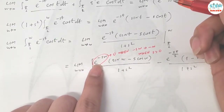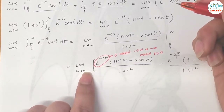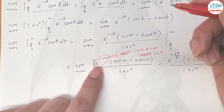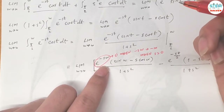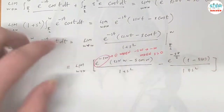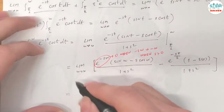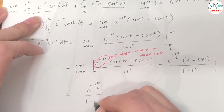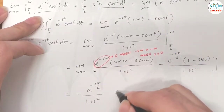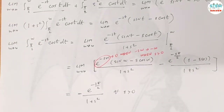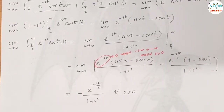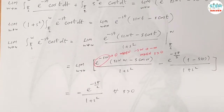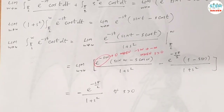When s > 0, we have e^(-sw) → e^(-∞) = 0, so that term vanishes and the integral converges to our final answer. If you found the video helpful, feel free to give it a like, share, and subscribe to the channel, and hit the bell so you won't miss anything. See you next time!